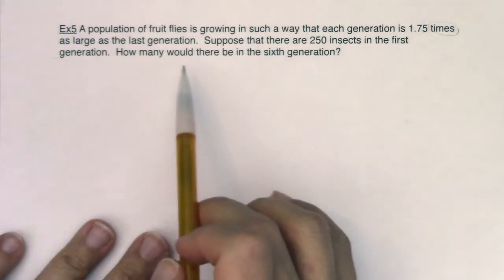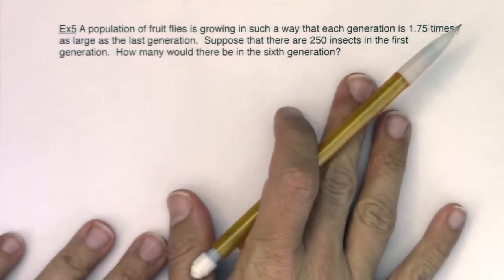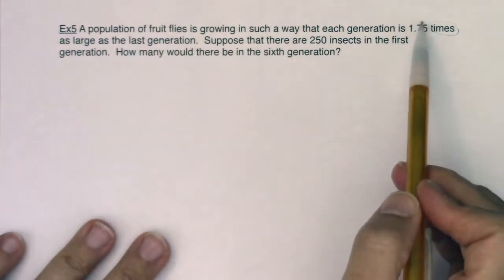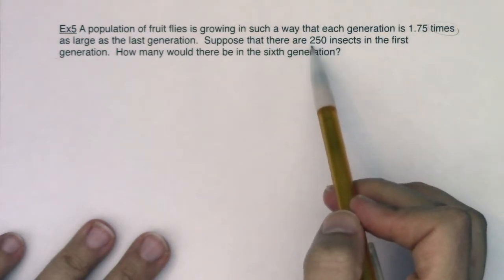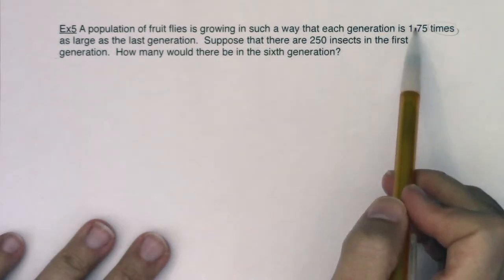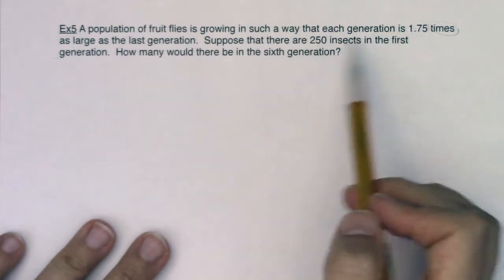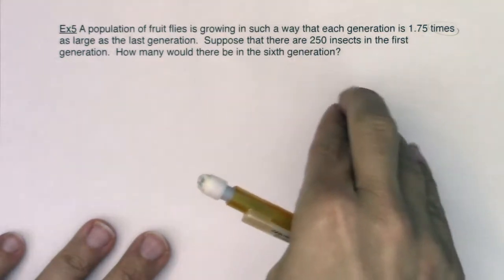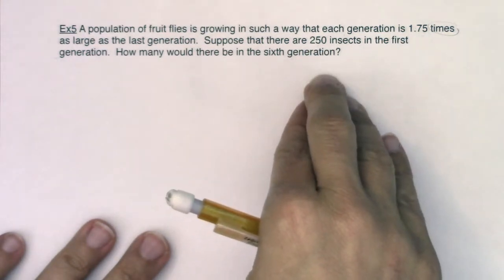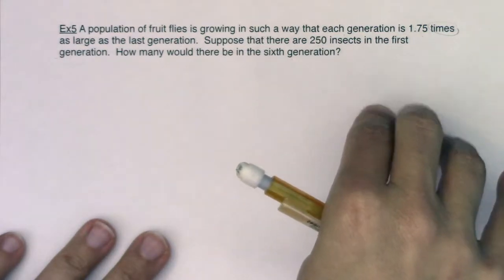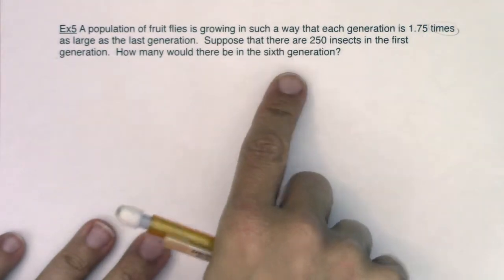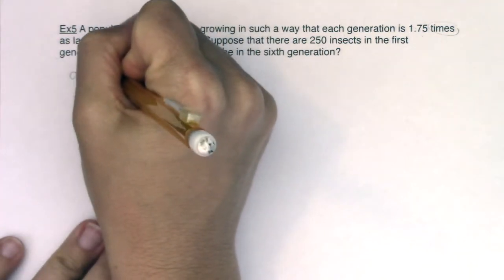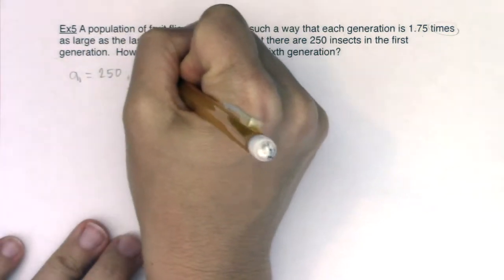Okay, so if we want to look at this through the lens of a geometric sequence, I can hear 1.75 times as large as the last generation. When you multiply this term by this common ratio 1.75, you can start to hear that this is geometric because I will take this number and multiply it by 1.75 to see how many insects are in the second generation and then multiply it by 1.75 to see how many are in the third generation. And I have to go to the sixth generation. So I could read this as a geometric sequence starting at 250 with a common ratio of 1.75.